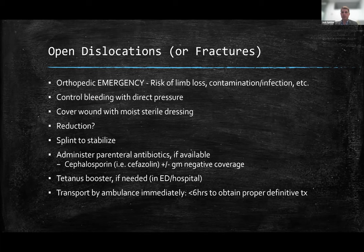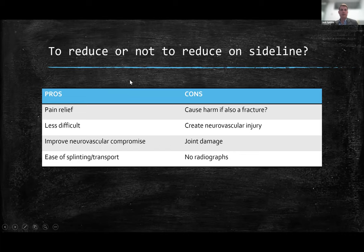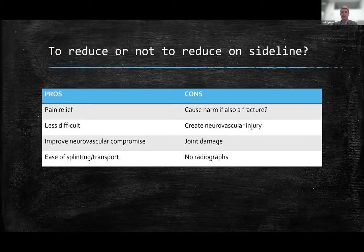One of the big questions I always get is: should you reduce on the sideline or not? The pros are definitely pain relief if you immediately reduce, it's less difficult down the line — people in the ED who've had a shoulder dislocation for six hours are really difficult — and if there is neurovascular compromise you can relieve that compression. It also eases splinting and transport. But the cons are that without x-rays, you may potentially cause more harm if they also have a fracture, could create a neurovascular injury, cause joint damage, and you won't have a pre-reduction radiograph for medical-legal purposes. It's not black and white, but we'll talk about which ones would be good to reduce and which ones wouldn't.